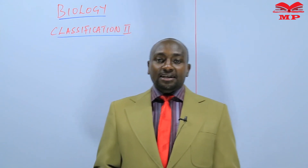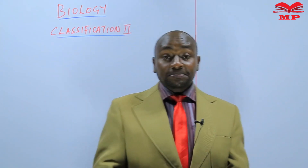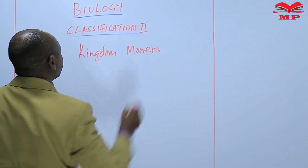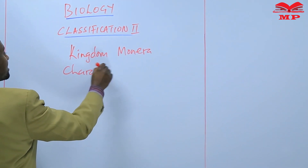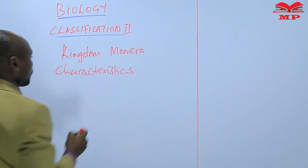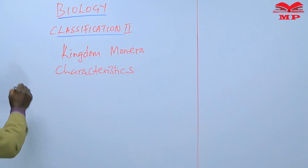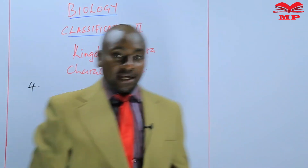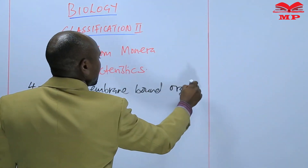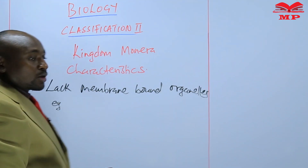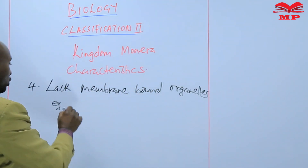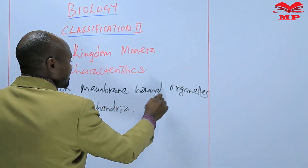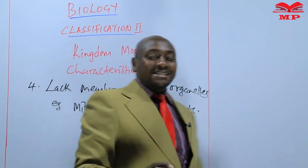Today we are going to continue with the other characteristics. The fourth characteristic: Kingdom Monera members lack membrane-bound organelles. Those membrane-bound organelles include things like the mitochondria and things like the chloroplasts. So those ones are not present in Kingdom Monera.